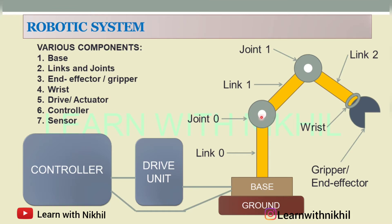There are different types of joints which we will discuss later. This first link, or Link 0, is considered as the input link, and this will be the output link for this joint. This will be the input link and this will be the output link. So the joint is connected between two links.